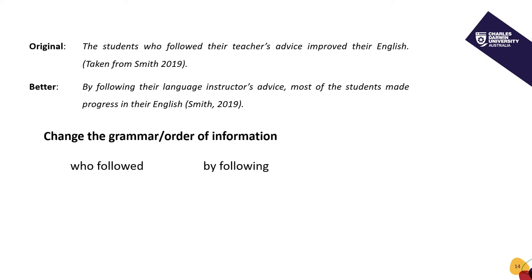The other strategies are changing the grammar and changing the order of information. In the original sentence, the grammar was 'who followed'; in the paraphrase, it became 'by following' — a gerund or preposition plus '-ing'. This is an example of the grammar changing. Changing from active to passive would be another example, as would changing the part of speech from noun to verb or verb to adjective. In our example sentence, we also changed the order of information: in the original, 'students' appears in the first part of the sentence, while in the paraphrase it appears in the second part.